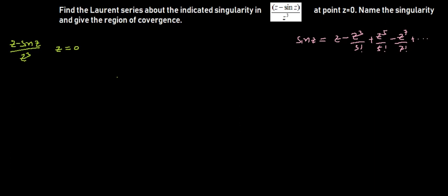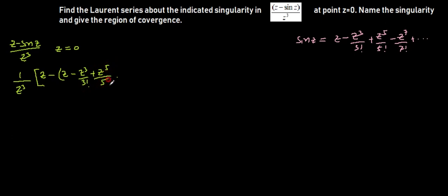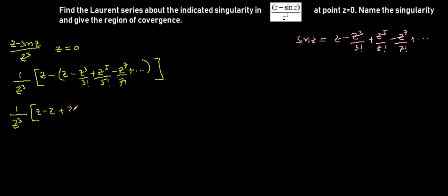So let's substitute this Maclaurin series expansion into our expression: 1 over z³ times (z minus [z minus z³ over 3 factorial plus z⁵ over 5 factorial minus z⁷ over 7 factorial and so on]). Inside the brackets we have z minus z, plus z³ over 3 factorial, minus z⁵ over 5 factorial, plus z⁷ over 7 factorial, continuing to infinity.